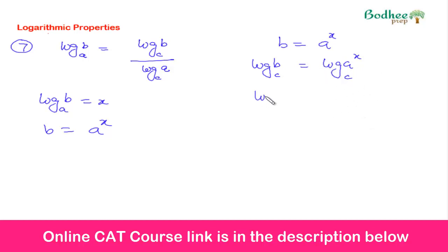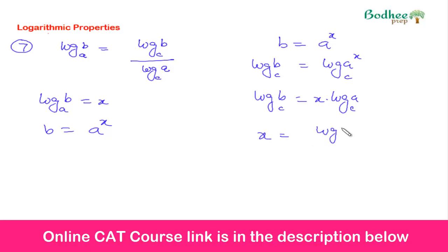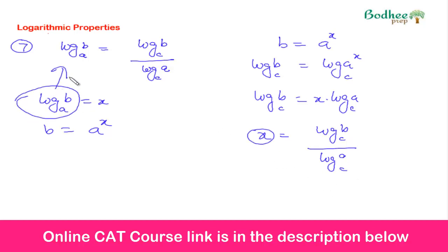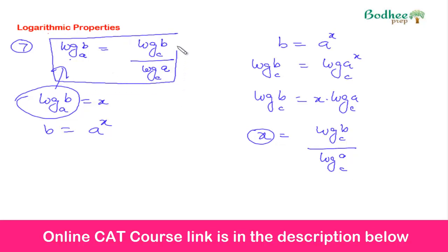Taking the power property, x comes down as a multiplier, so log of b with base c equals x times log of a with base c. Therefore x equals log of b with base c divided by log of a with base c. Since x is the LHS, and this equals the RHS, the change of base formula is proved. We use this property whenever we need to simplify an expression in some other base.